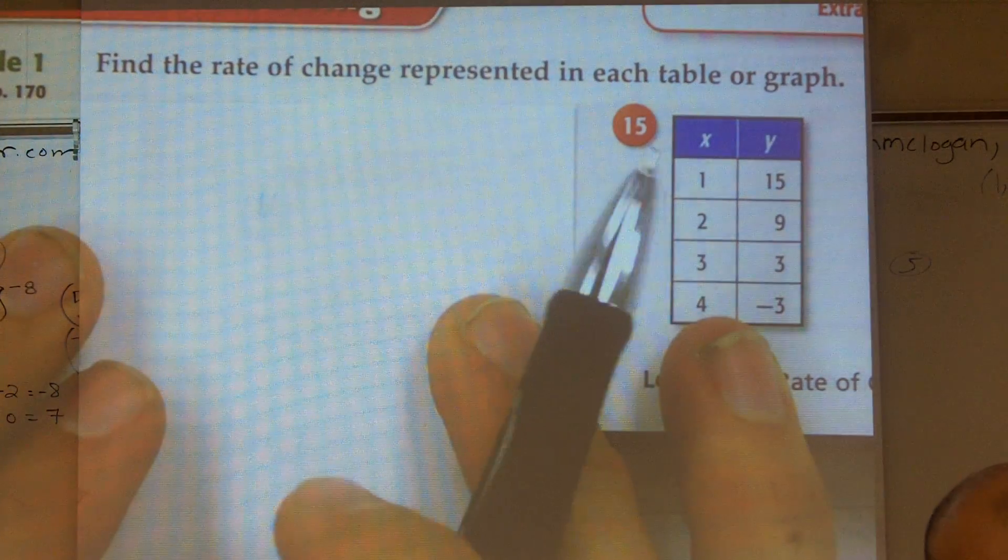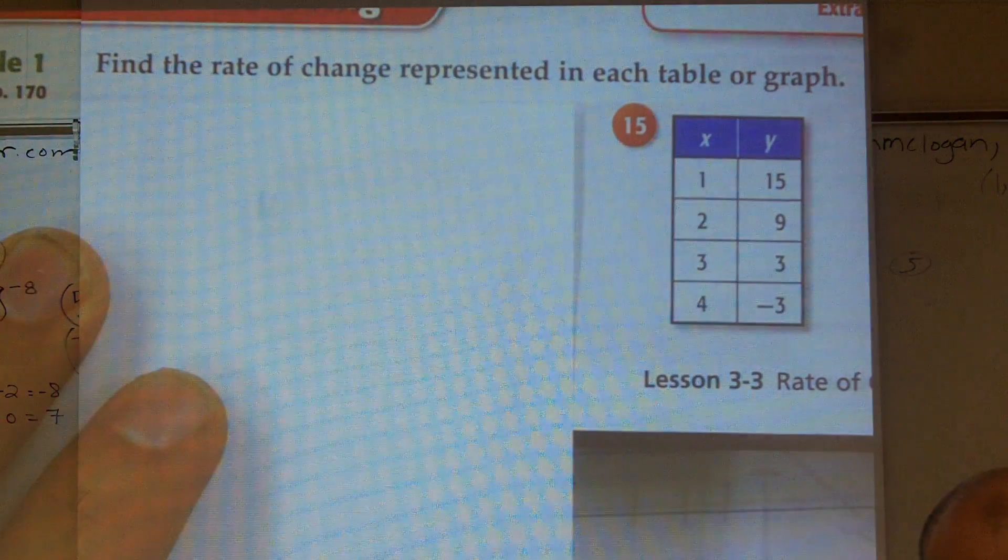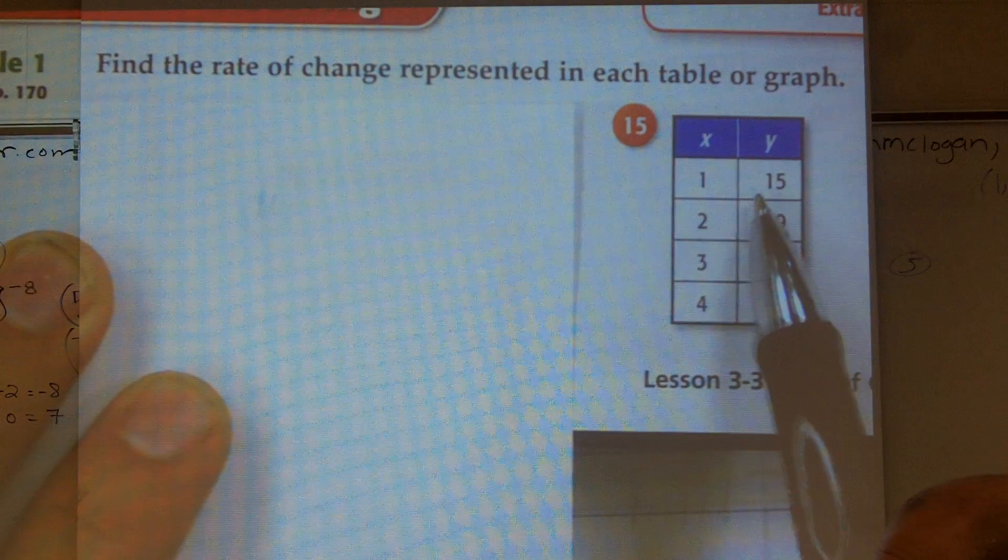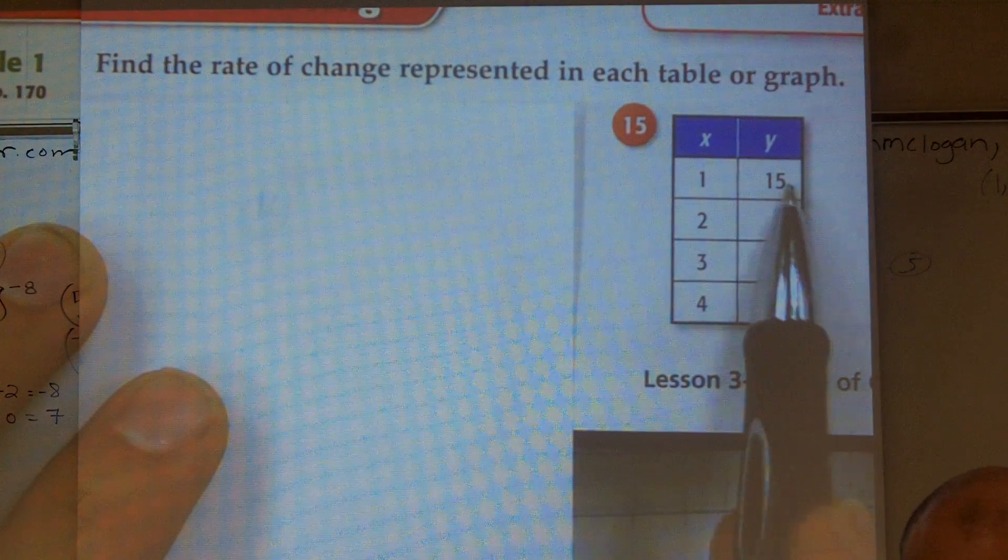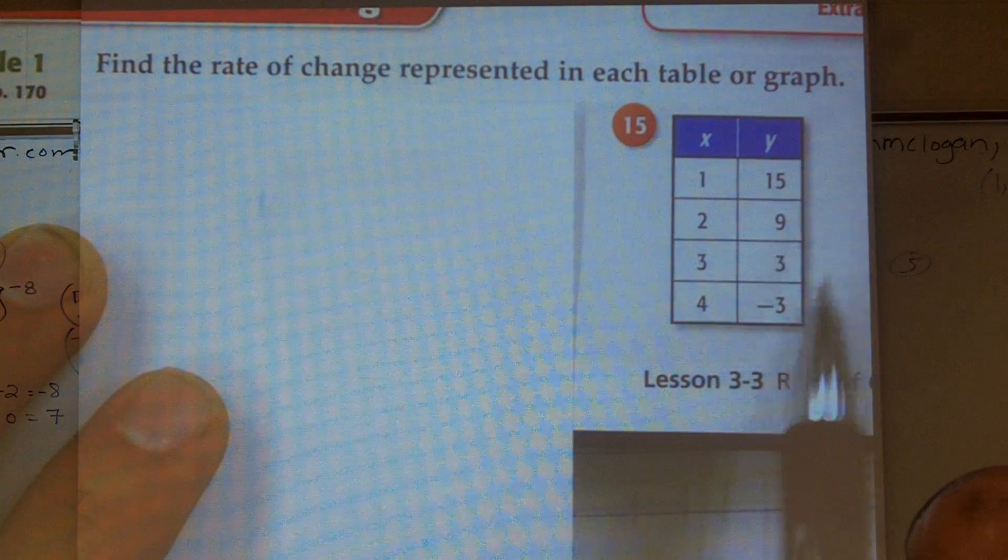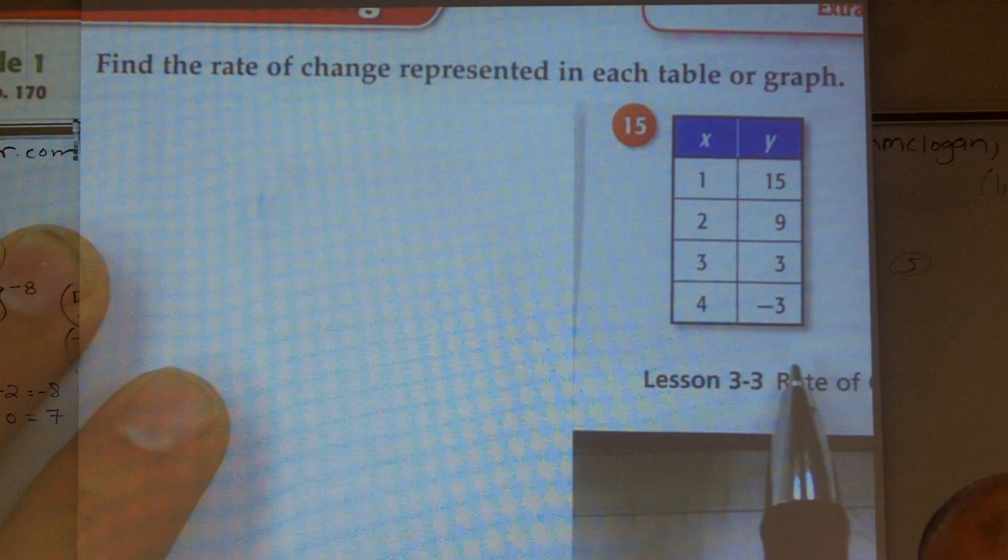Now, when using a table, when using a table I'm going to go from top to bottom. So as I'm going from top to bottom, how are my y values changing? What's happening?